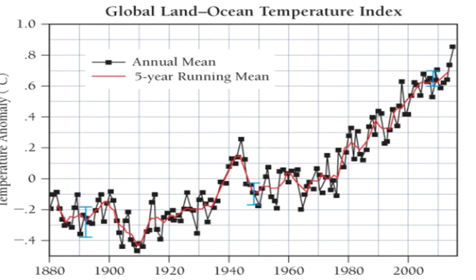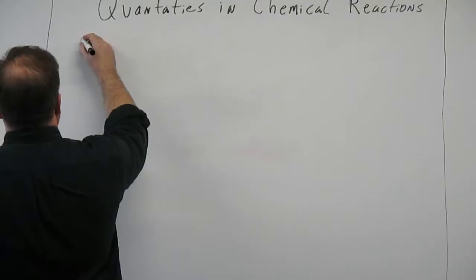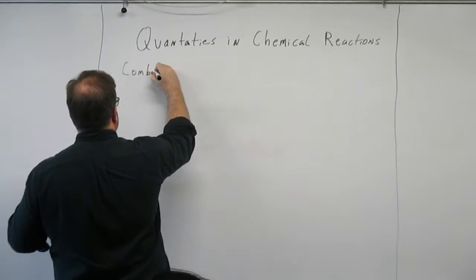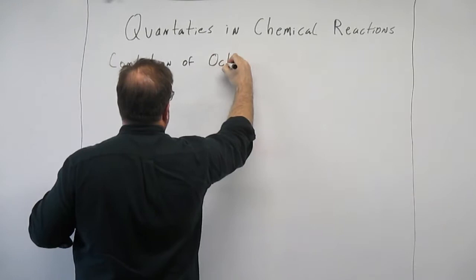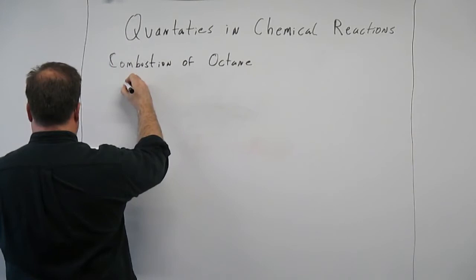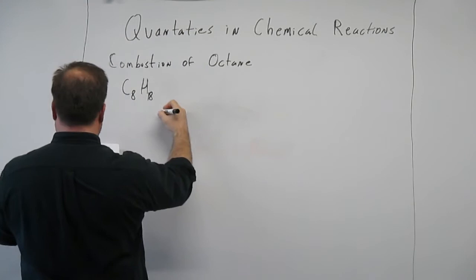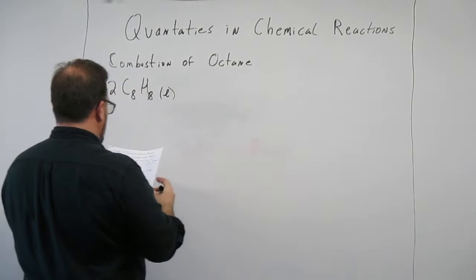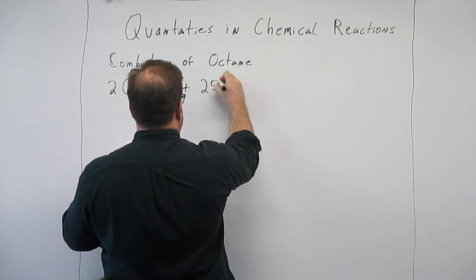CO2 is a greenhouse gas. Let's put the combustion of octane up on the board. Octane is the primary ingredient in gasoline — it's a hydrocarbon. So we have C8H18, and it's a liquid. This is a balanced chemical equation with 25 O2s. Octane, the primary component of gasoline, reacts with 25 molecules of O2.